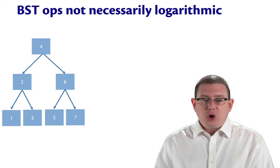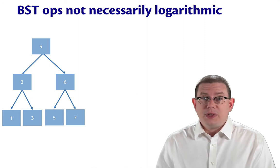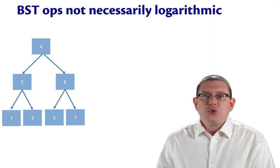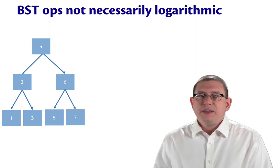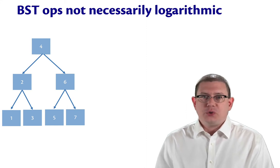On the tree that I've shown here, we do get nice logarithmic operations to be able to find an element of the tree or to insert into it. And that's because the tree is very dense. It's very compact. It's all close together. None of the paths in the tree are very long.